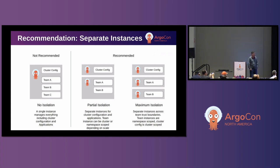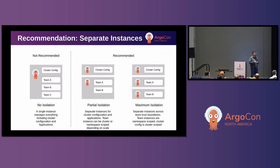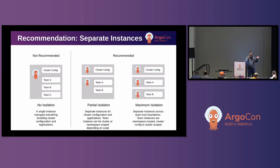Going along those lines, I like to separate my Argo instances. No isolation means one Argo instance doing everything — cluster config and all teams. I'm not a big fan of this approach. Partial isolation is where you separate use cases: one cluster configuration Argo CD and a separate instance for teams with more restricted rights. You can go further and have different instances per team for much more isolation, though the downside is significantly increased management burden for the platform team.